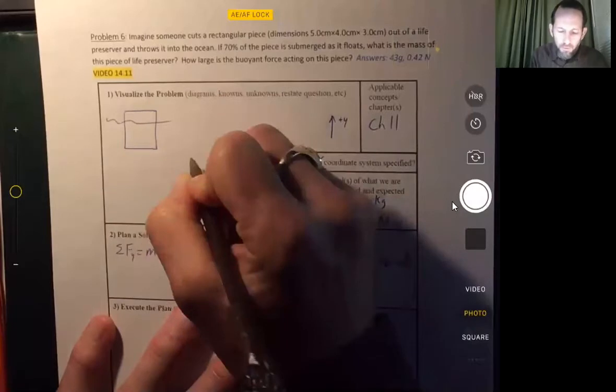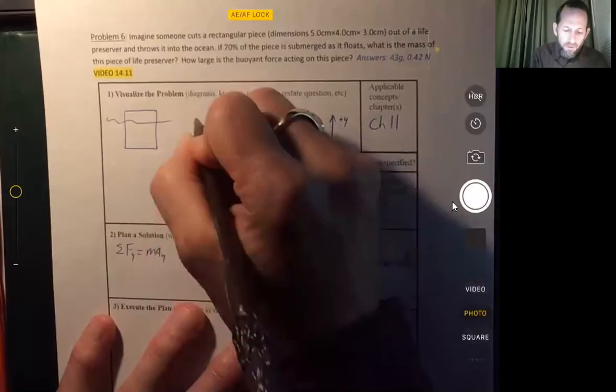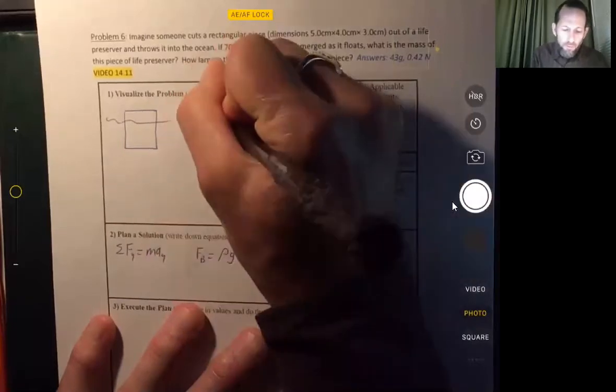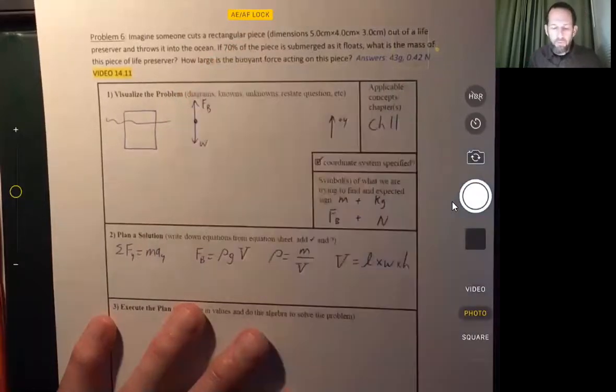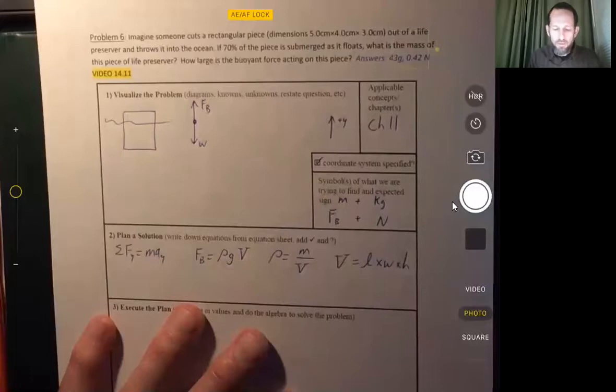And we can also draw a free body diagram. So there's a buoyant force, and there's weight. Those are the only two forces because the object is floating.